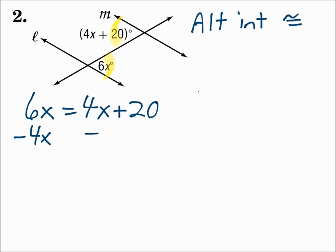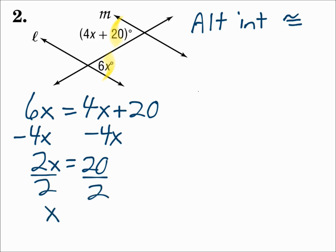Solve for X. Subtract 4X from each side, then divide both sides by 2. X is 10. And that worked because they're alternate interior angles. If alternate interior angles are congruent, then the lines are parallel — so make their measures equal each other.